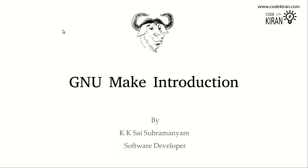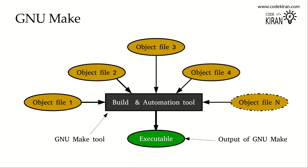Hello, welcome to Code Kiran. My name is Sai. In this video I'm going to explain about GNU make. GNU make is a build and automation tool. Build and automation tools are used for compiling a big project automatically, solving all the errors and dependencies, and creating a final executable file which is the target software product.